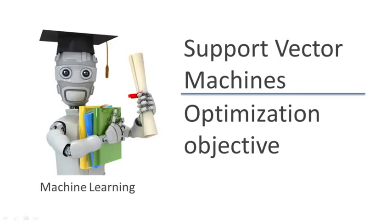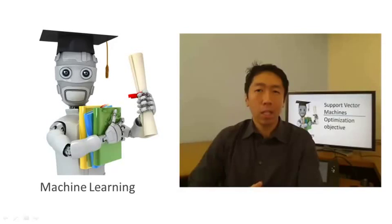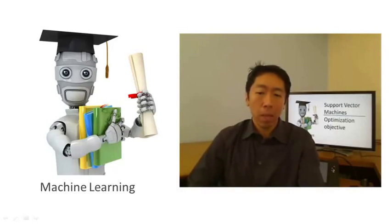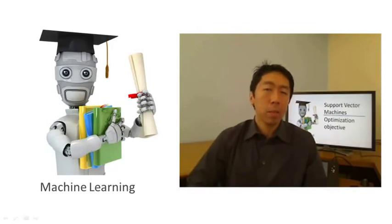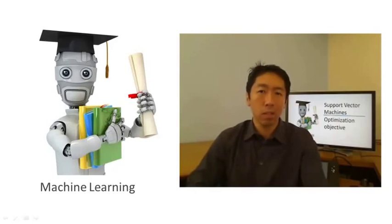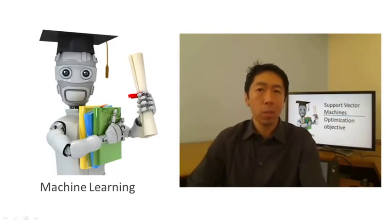But there's one more algorithm that is very powerful and is very widely used both within industry and in academia, and that's called the support vector machine. Compared to both logistic regression and neural networks, the support vector machine, or SVM, sometimes gives a cleaner and sometimes more powerful way of learning complex non-linear functions. So I'd like to take the next videos to talk about that.